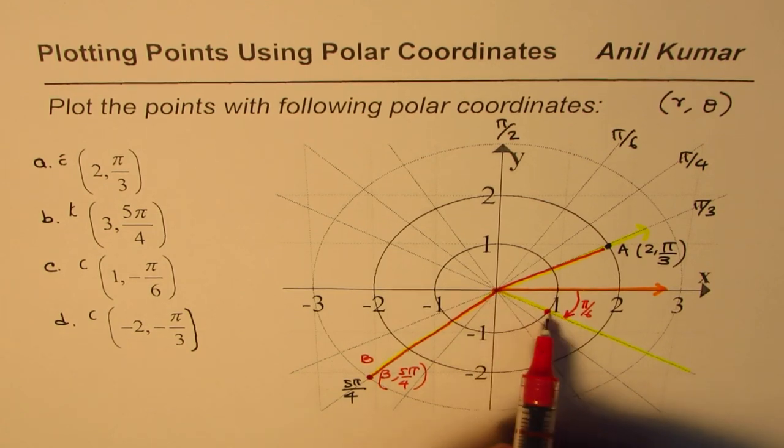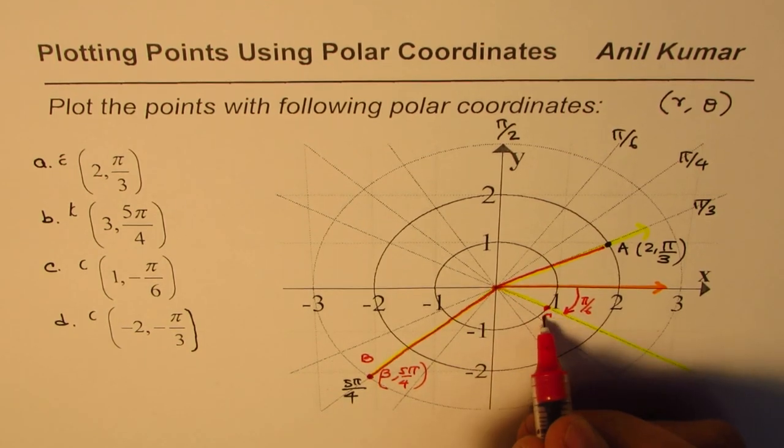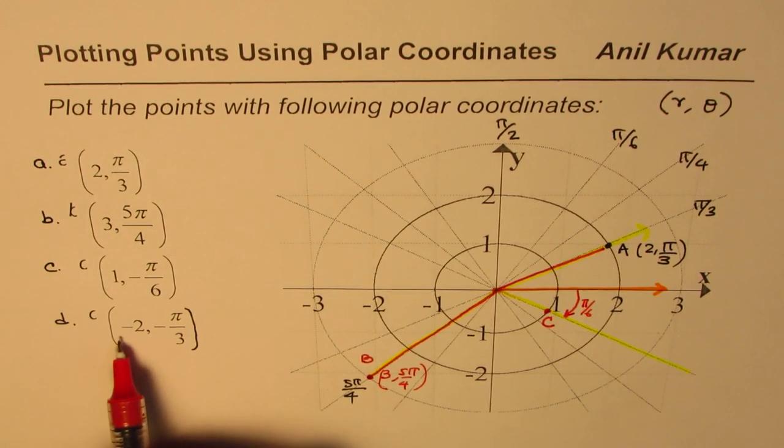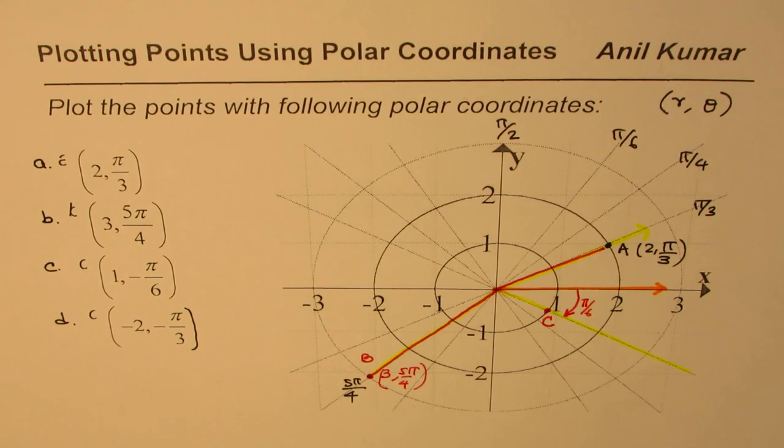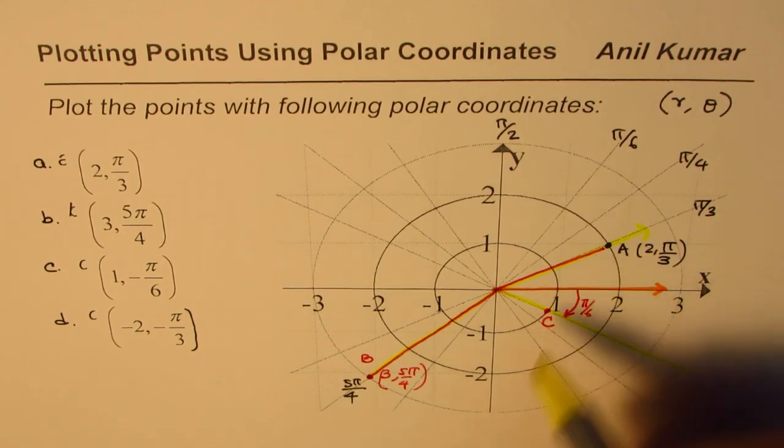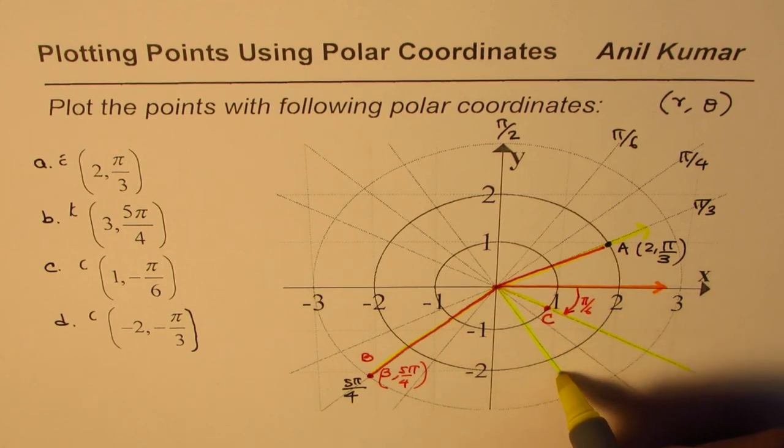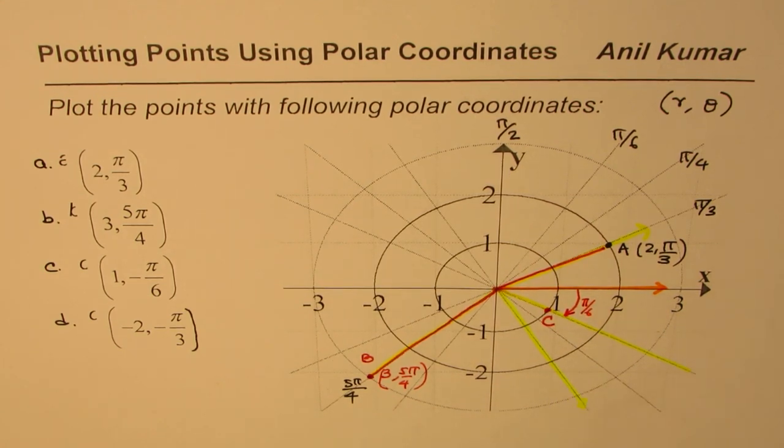Point D is (-2, -π/3). Now π/3, the ray which represents π/3 is that. So this ray is π/3. Now minus, because we are going in which direction? Clockwise direction.